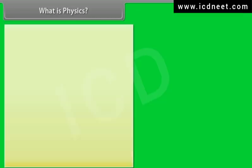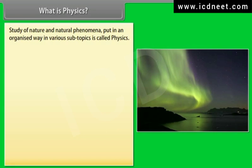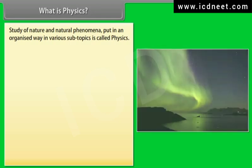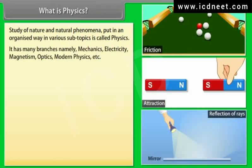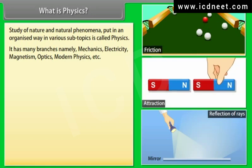What is physics? The study of nature and natural phenomena, put in an organized way in various subtopics, is called physics. It has many branches, namely mechanics, electricity, magnetism, optics, modern physics, etc.